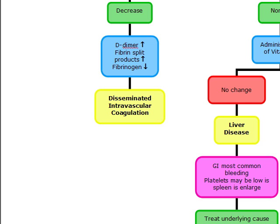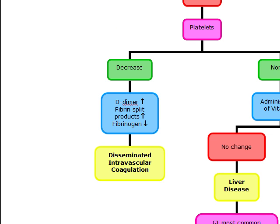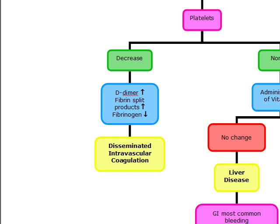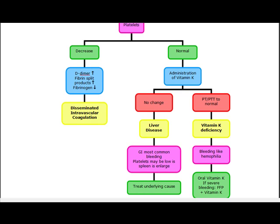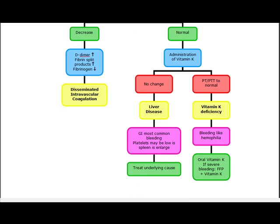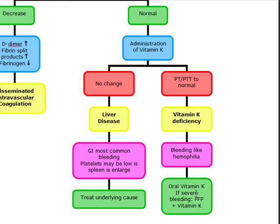Finally, if you have an increase in your PT and PTT with normal platelets, and you administer vitamin K and your PT and PTT normalize, this is vitamin K deficiency. The deficiency leads to a decrease in production of factors II, VII, IX, and X. Vitamin K deficiency can be secondary to malabsorption, chronic pancreatitis, antibiotics — which kill the bacteria in the colon that produce vitamin K — and dietary deficiency or malnutrition. Both PT and PTT are elevated, and oral vitamin K is used to treat it. If it's severe bleeding, you add FFP.